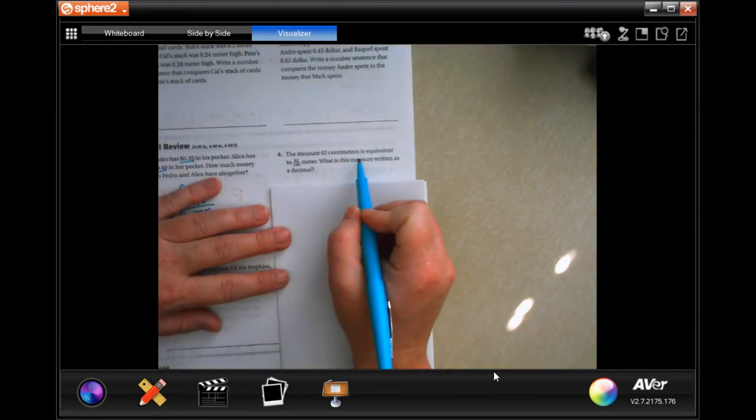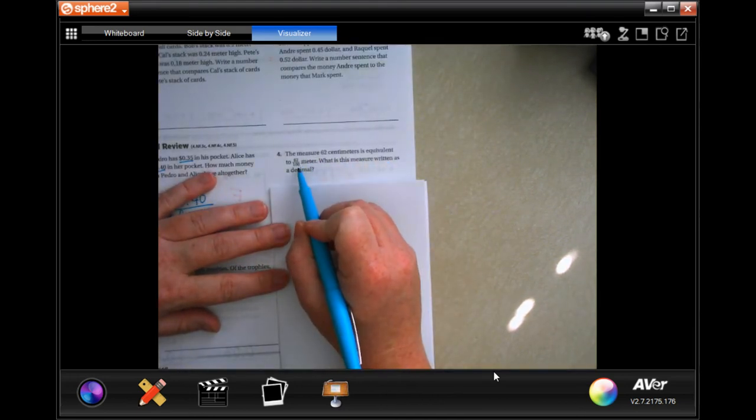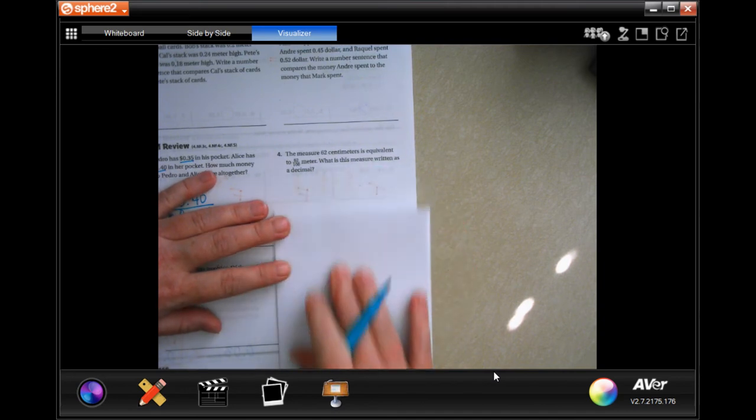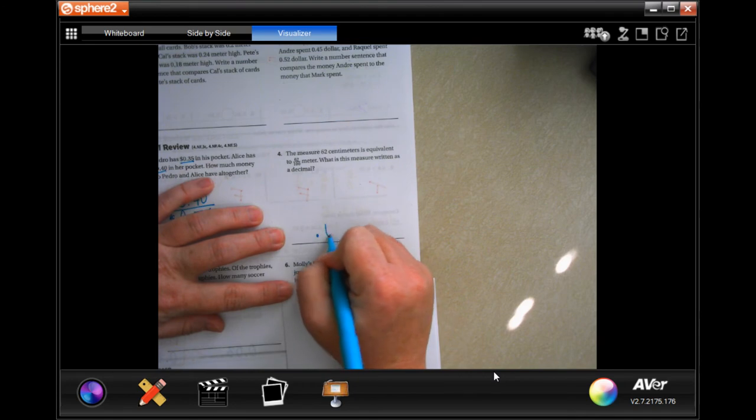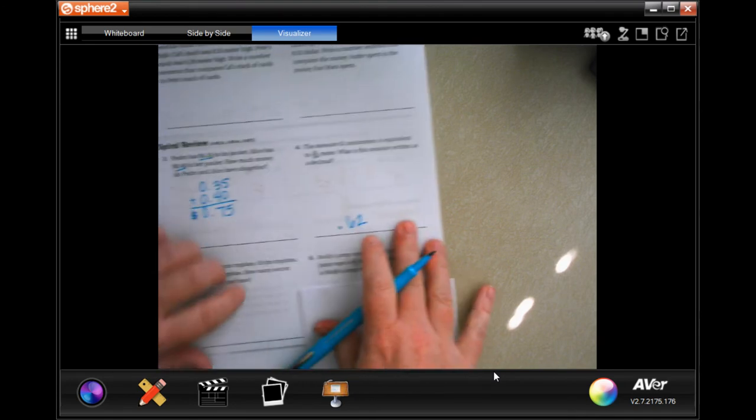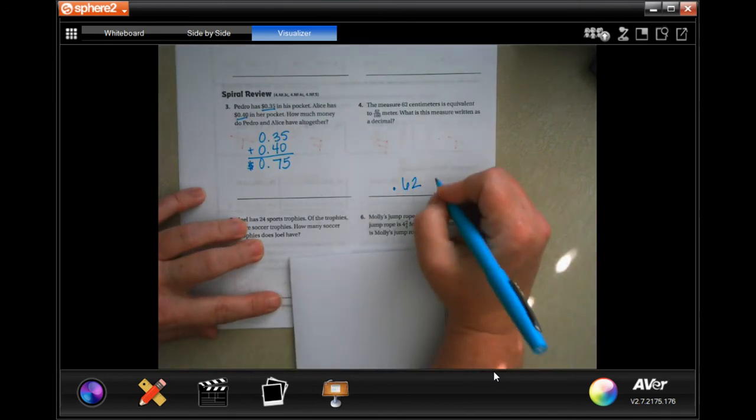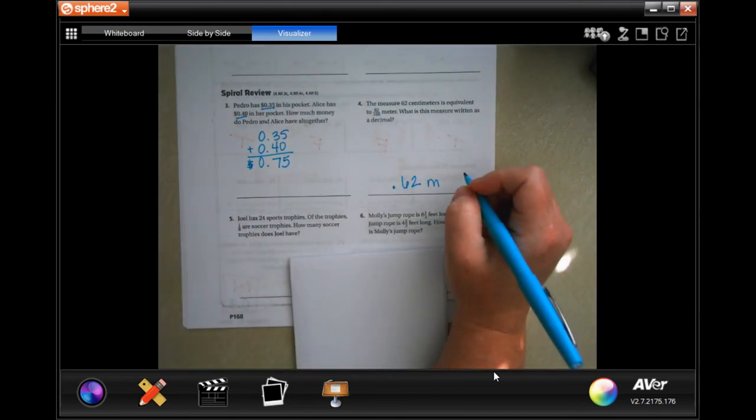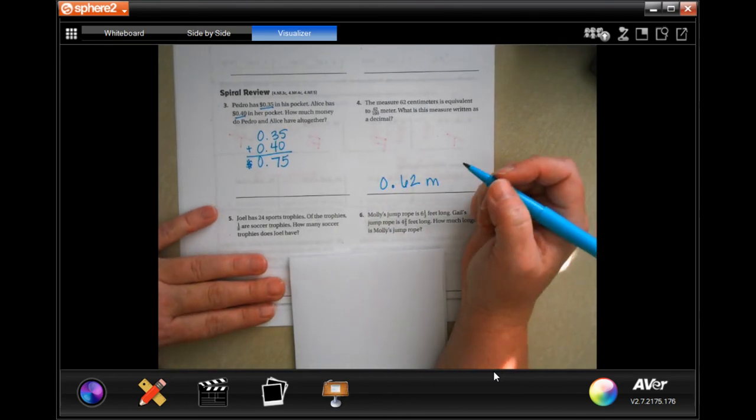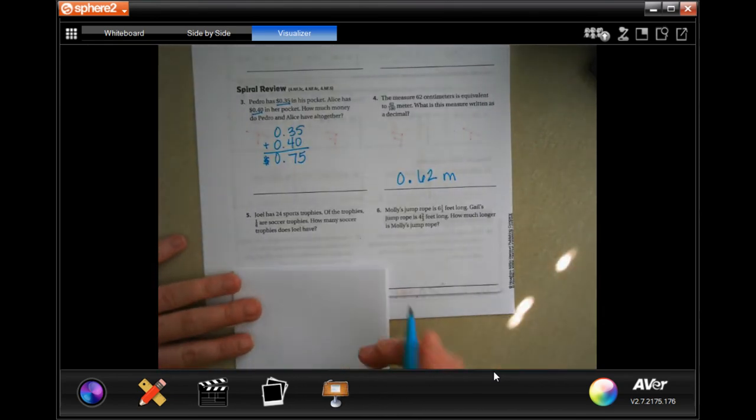The measure 62 centimeters is equivalent to 62 over 100 meters. What is this measure written as a decimal? Well, 0.62. The 2 is in the 100th spot, so we're good. And that would be in meters. You can put a 0 before it. It doesn't change anything.